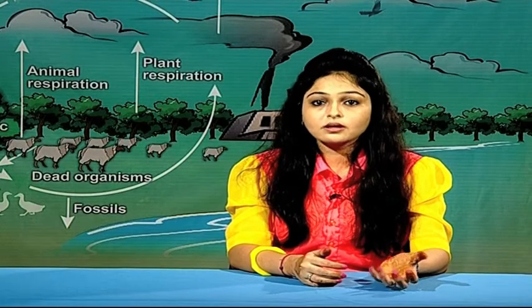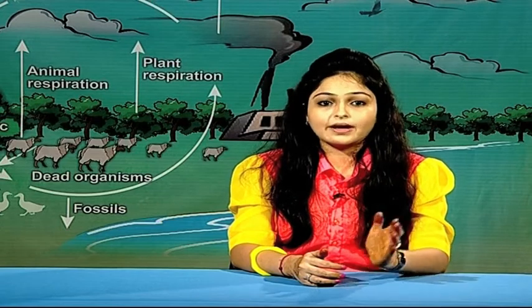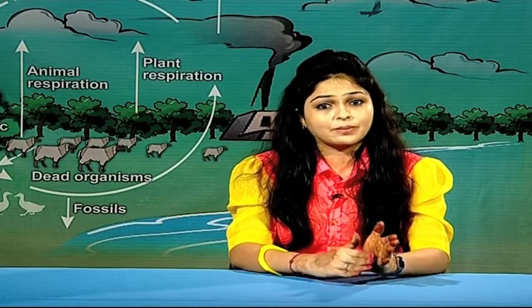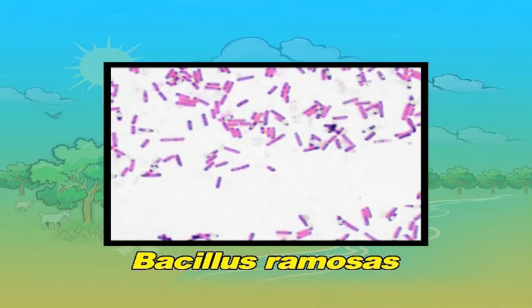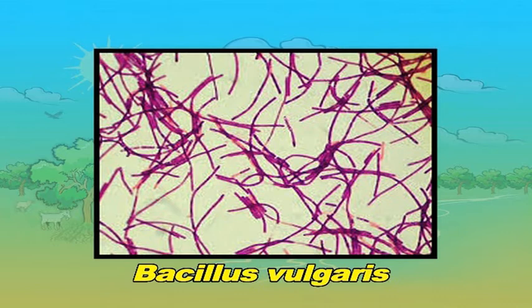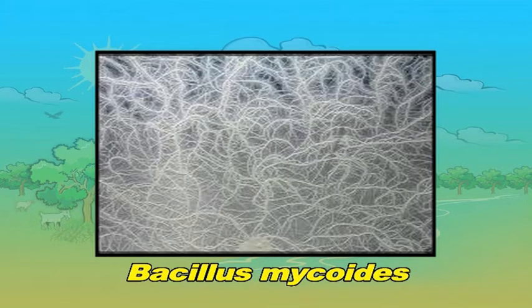Now we will be studying ammonification. The dead organic remains of plants and animals, as well as excreta of animals, are decomposed by microorganisms that convert organic nitrogen into ammonium. In decomposition, protein, urea, uric acid, etc. of animals get converted into ammonia in the presence of ammonifying bacteria such as Bacillus ramosus, Bacillus vulgaris and Bacillus mycoides.